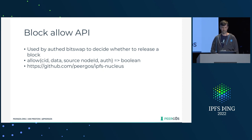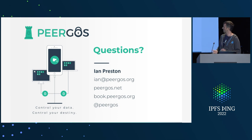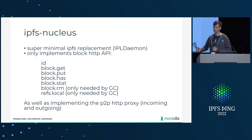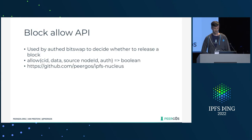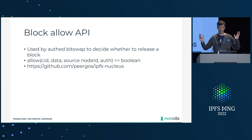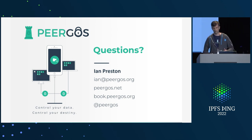Two more things I haven't had time to cover: we have a fully concurrent GC implementation. There's no pin API — pins are implicit from the mutable pointers, so the GC just grabs the mutable pointers, giving you an implicit pin set to proceed from. The other thing — which I'll talk about tomorrow in another talk — is we've just released an application sandbox that lets you run private applications over private data in an untrusted way, so that a malicious application couldn't steal your data or exfiltrate it. Thank you. If you have any questions, come find me.